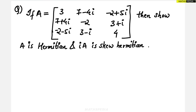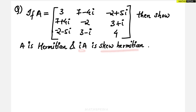Here we have taken one problem based on Hermitian and skew-Hermitian matrices. A is given as a 3×3 square matrix and we have to show that A is a Hermitian matrix and i·A is a skew-Hermitian matrix. This is what we have to do.